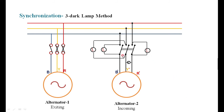Instead, if the lamps go dark and bright sequentially — one by one, cyclically blinking in sequence — then the phase sequence of the incoming machine is not the same. In that case, you have to interchange any two phases and once again observe the lamps. If they are going dark and bright simultaneously, you can conclude that the phase sequence of the incoming machine now matches the bus bar phase sequence.